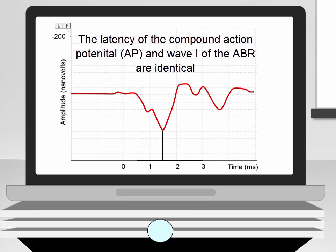If a clear wave 1 on the ABR cannot be recorded on a patient, then ECOG can be used to obtain the wave 1 latency. This can then be used to calculate the inter-peak latencies and the integrity of the neural pathway can be assessed.